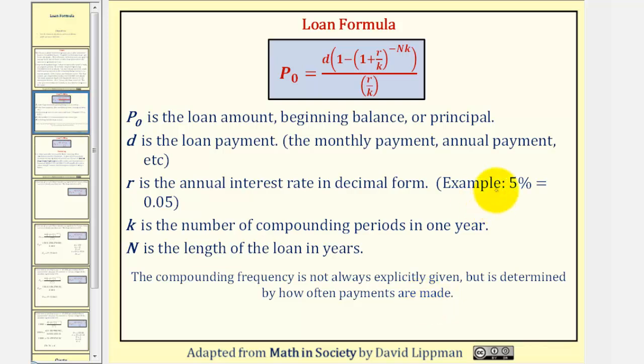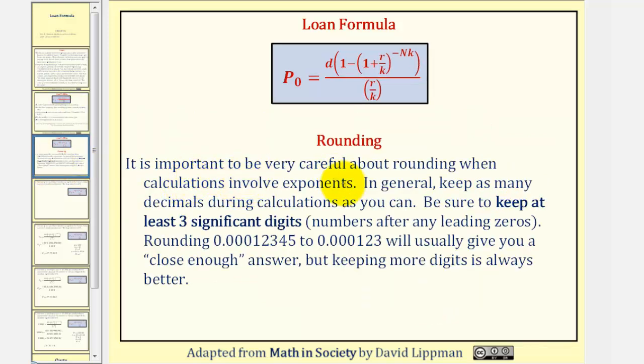Before we take a look at two examples though, it is important to be very careful about rounding when calculations involve exponents. In general, keep as many decimals during calculations as you can. Be sure to keep at least three significant digits, meaning three numbers after any leading zeros. For example, to round this decimal using three significant digits, we would have 0.000123. Using three significant digits will usually give you a close enough answer, but keeping more digits is always better.